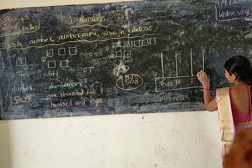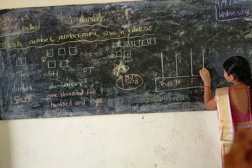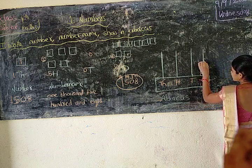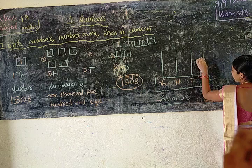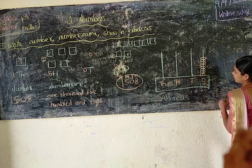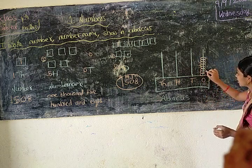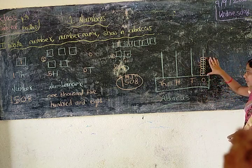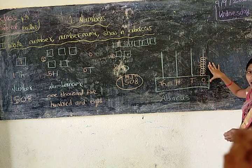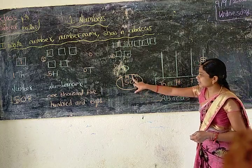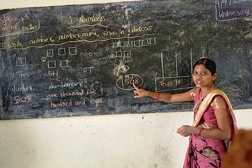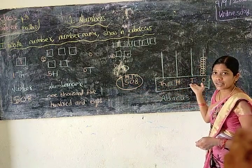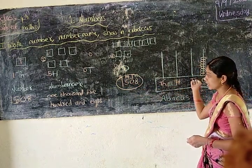So we draw eight beads: one, two, three, four, five, six, seven, eight. These are called beads — it will be on the abacus. Next, tens place — we have zero, so don't draw any beads here.